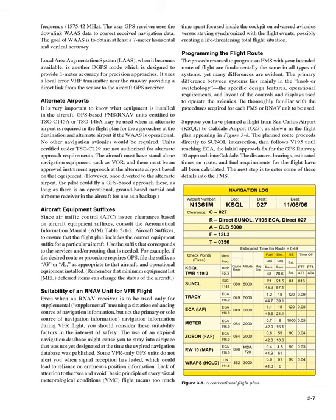The aircraft must have stand-alone navigation equipment such as VOR, and there must be an approved instrument approach at the alternate airport based on that equipment. However, once diverted to the alternate airport, the pilot could fly a GPS-based approach there, as long as there is an operational ground-based NAVAID and airborne receiver in the aircraft for use as a backup.